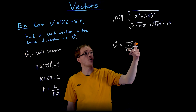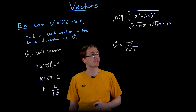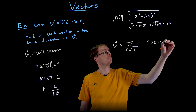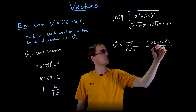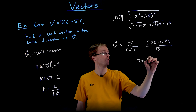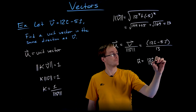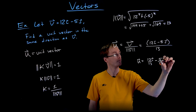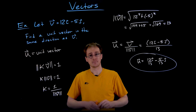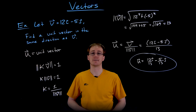In general, a unit vector is always just the vector divided by the magnitude of the vector we are trying to turn into a unit vector. Our vector v was 12i minus 5j, and we're dividing that by the scalar magnitude of 13. Distributing that, our unit vector u is going to have 12/13 for the i component and negative 5/13 for the j component. We found our unit vector u that points in the same direction as our starting vector v.